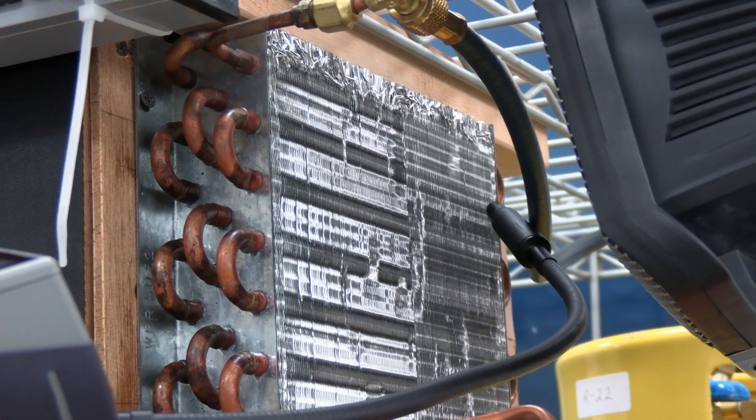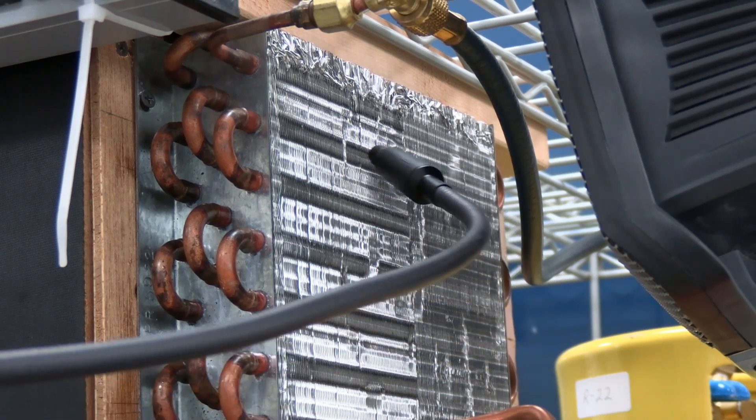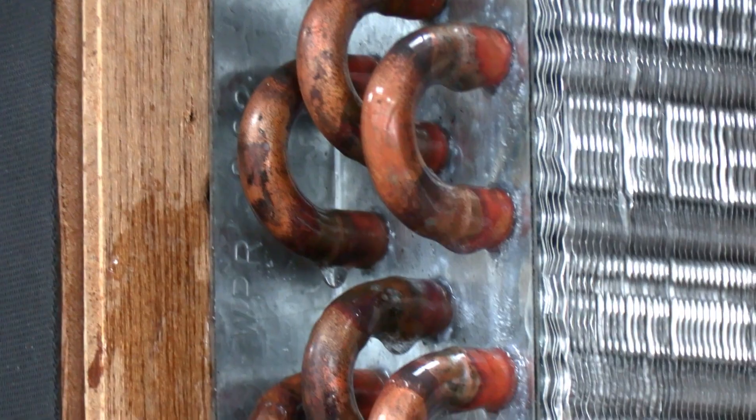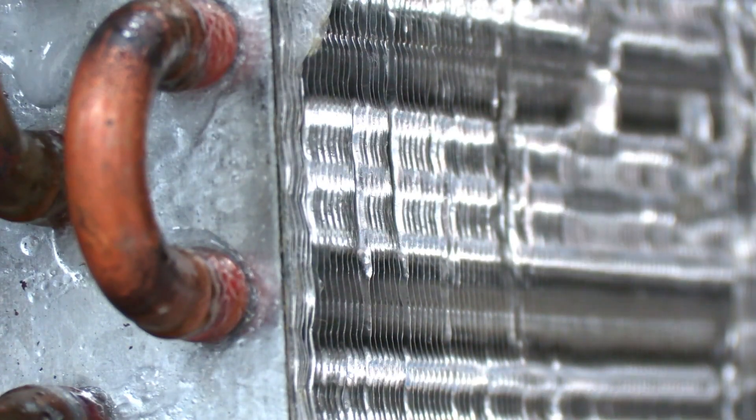With an electronic leak detector, the probe gives you some additional reach. You may also have a leak where soap bubbles won't form, like on these condenser fins.